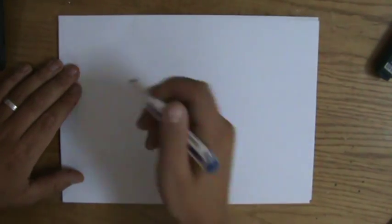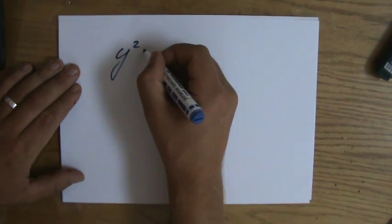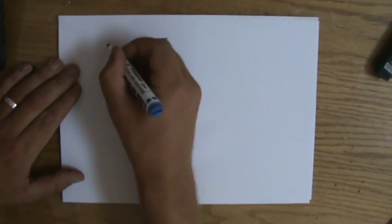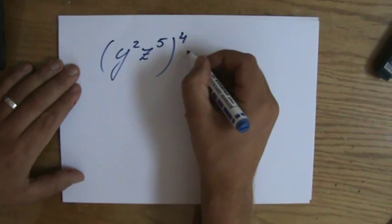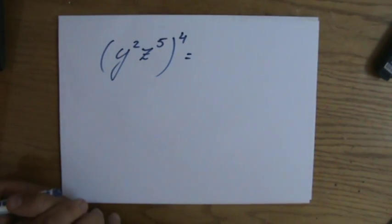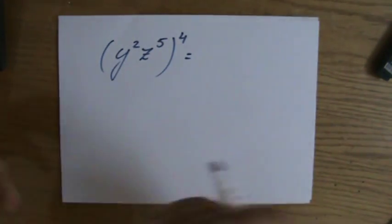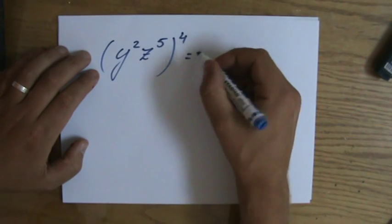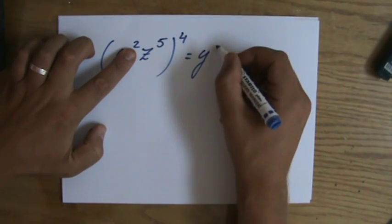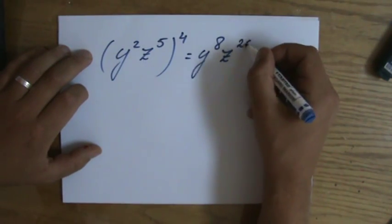Let me grab a new piece of paper and give you one or two more examples. For instance: y to the power 2, z to the power 5, all of that to the power 4. That basically means y squared z to the power 5, multiplied by itself four times — but that's too many letters. Using the third law: y to the power 2 times 4 is y to the power 8, and z to the power 5 times 4 is z to the power 20.